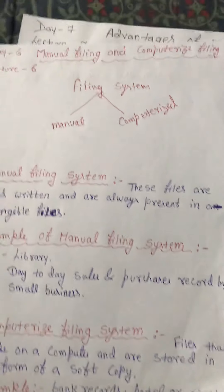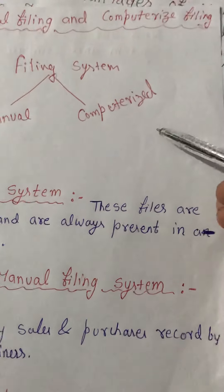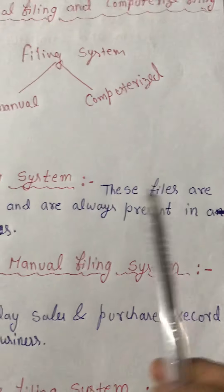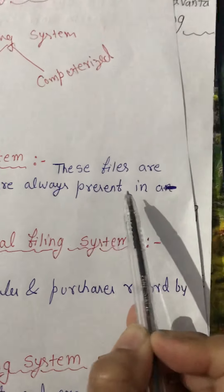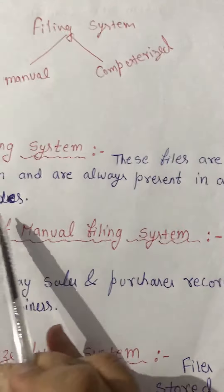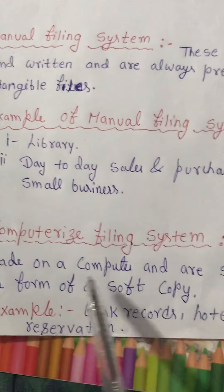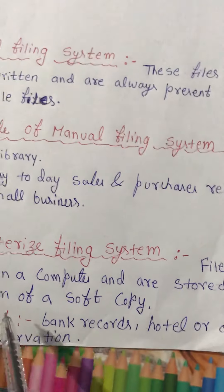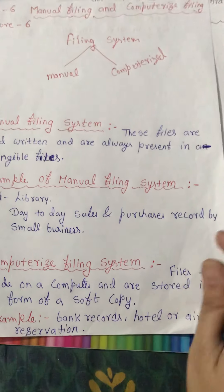Yesterday, I had explained the filing system — that is, the manual filing system and computerized filing system. What is manual filing system? These files are handwritten and are always present in tangible files. And what is computerized filing system? Files that are stored on a computer in the form of a soft copy is called a computerized filing system.